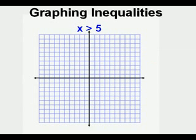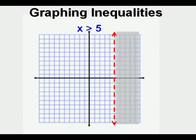When graphing inequalities on a coordinate plane, instead of boundary points we have boundary lines. When using the x variable on a coordinate plane, the boundary lines are vertical lines.